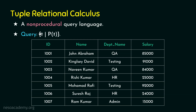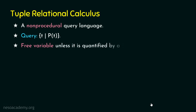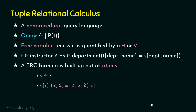A query looks like: the set of all tuples t such that the predicate or condition for that tuple is true. For example, to retrieve all tuples from the instructor relation, we can use the condition that salary is greater than one — this matches all tuples, giving all records. Remember, tuple relational calculus works on tuples, i.e., the rows. If you want clarity on the basics, please watch the previous lecture before proceeding.